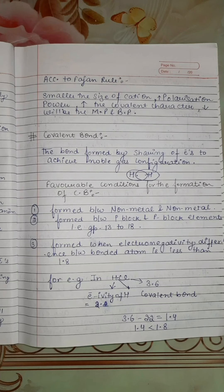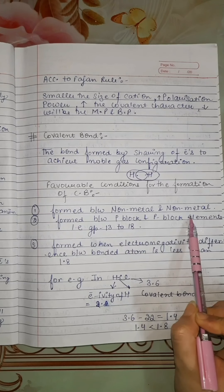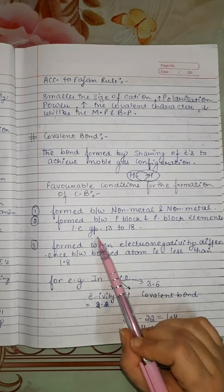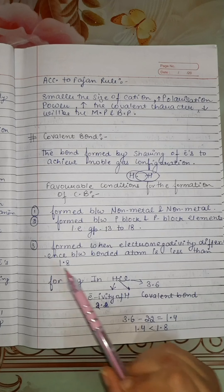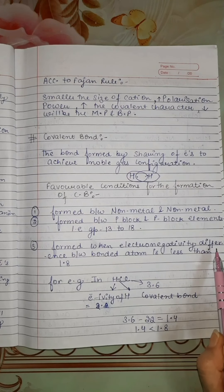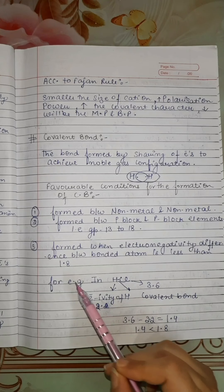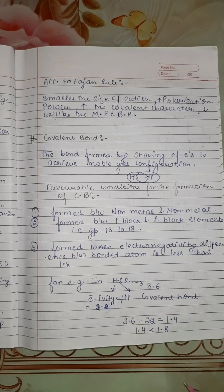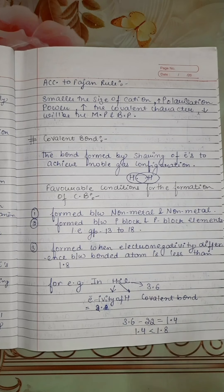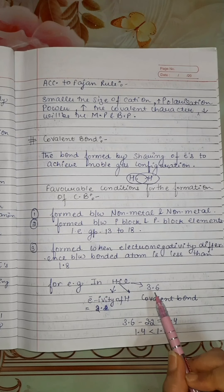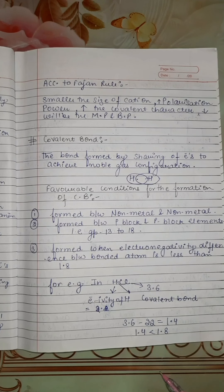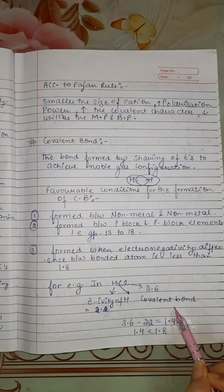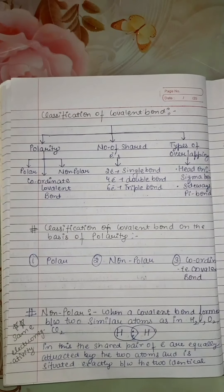Now let's see what are the favorable conditions for the formation of covalent bond. First, covalent bond forms between non-metal and non-metal. Second, covalent bond forms between P-block and P-block elements, that is group 13 to group 18. Third, covalent bond forms when the electronegativity difference between bonded atoms is less than 1.8. For example, in HCl, the electronegativity of hydrogen is 2.2 whereas the electronegativity of Cl is 3.6. So 3.6 minus 2.2 gives 1.4, which is less than 1.8. So the bond between H and Cl is known as a covalent bond.